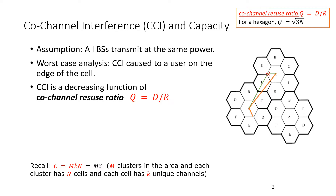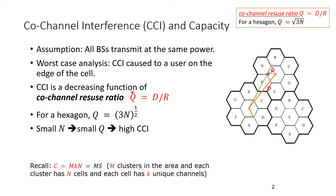We can measure the co-channel reuse ratio. Here, R is the radius of the cell and D is the distance between co-channel interferers. The ratio Q = D/R is called the co-channel reuse factor, which is important in determining the amount of interference. Co-channel interference decreases as Q increases — as D increases we move further away. For hexagonal cells, Q equals the square root of 3N.